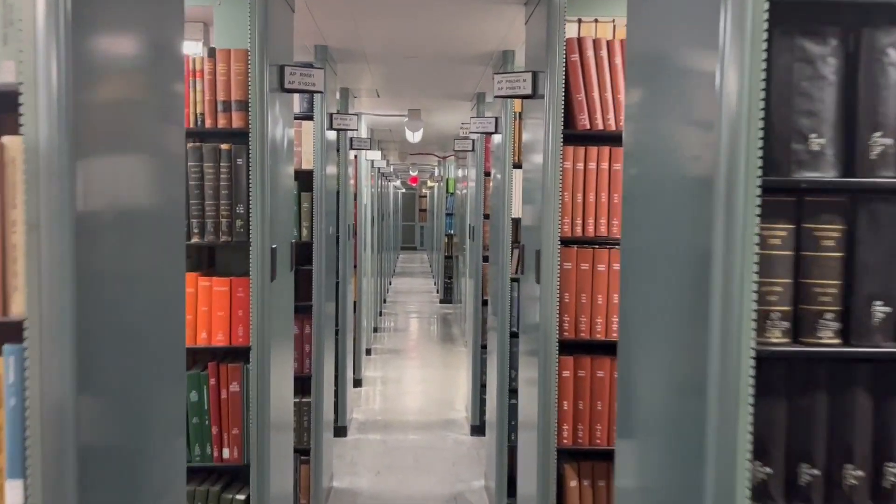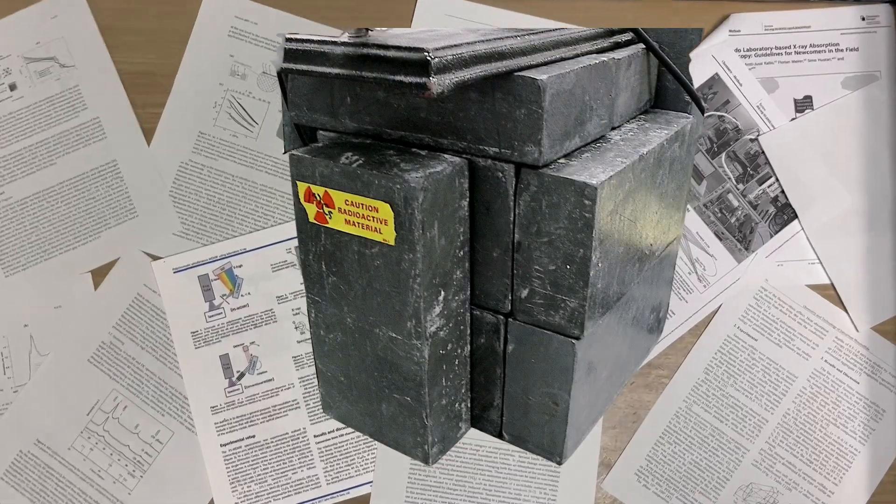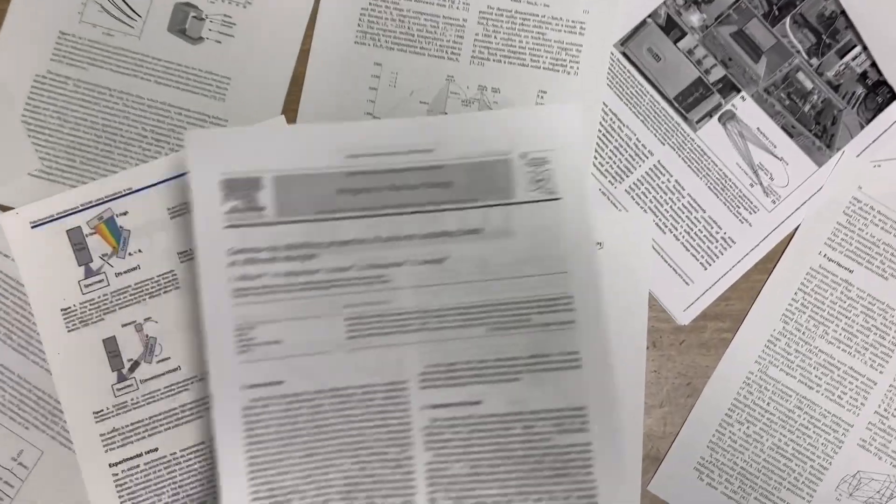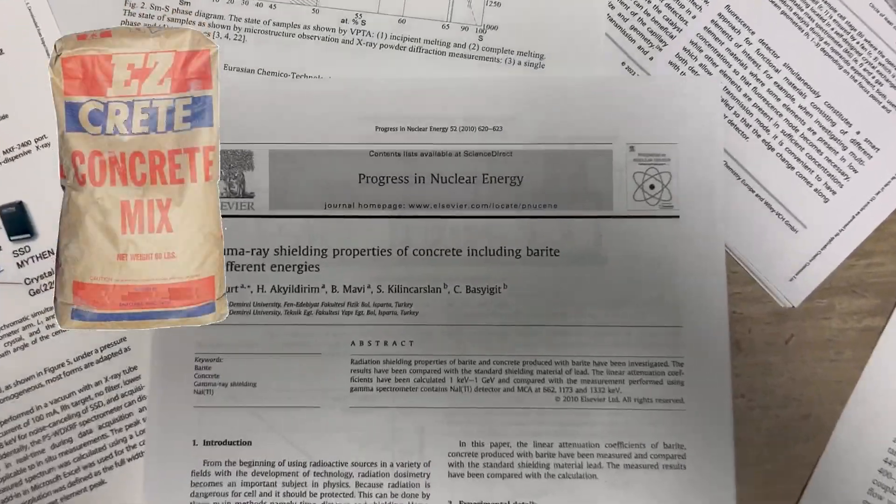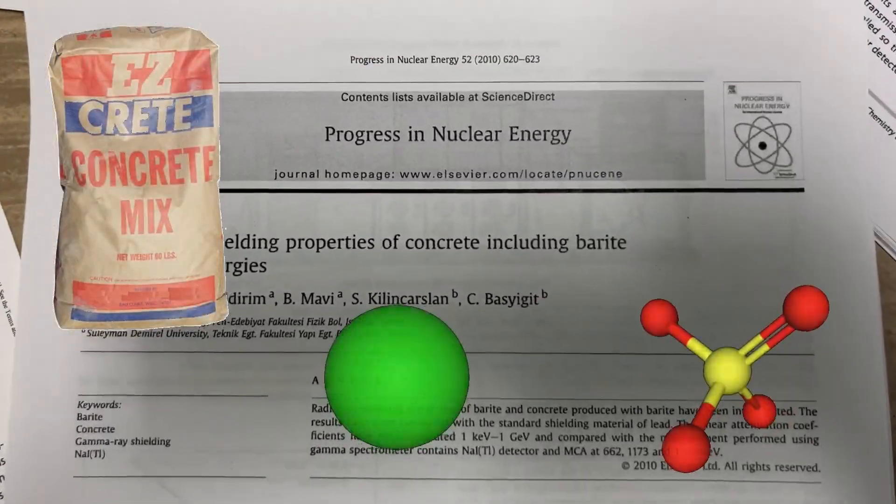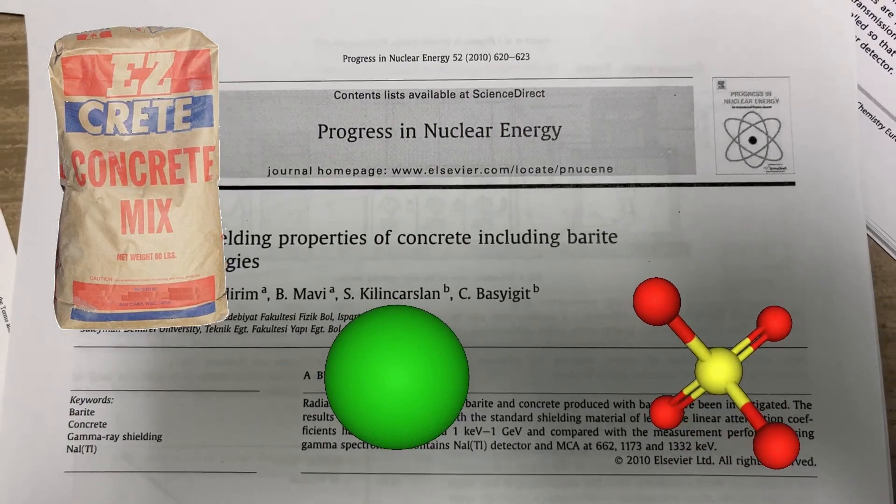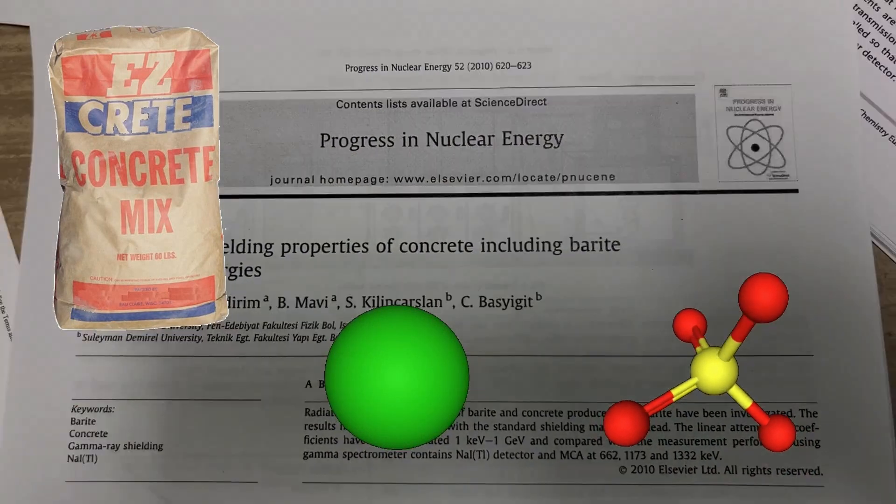About a month ago I was deep in the archives reading about radiation shielding when I came across this fun little paper where they took concrete and mixed it with a special compound called barium sulfate and ended up with some pretty decent radiation shielding.